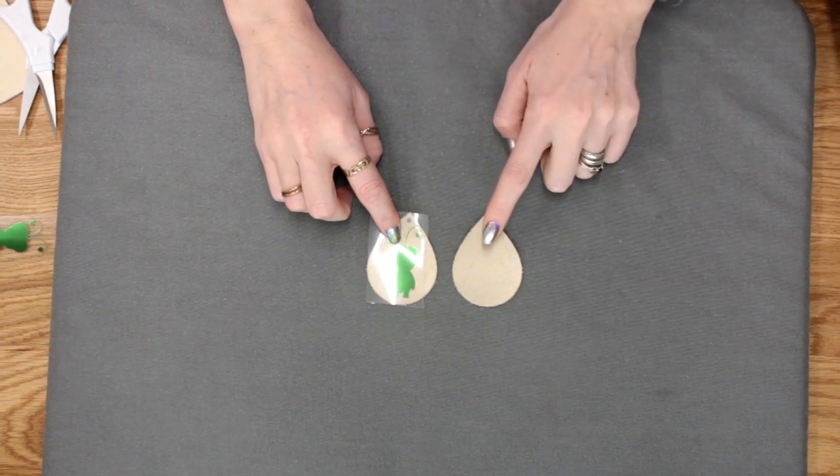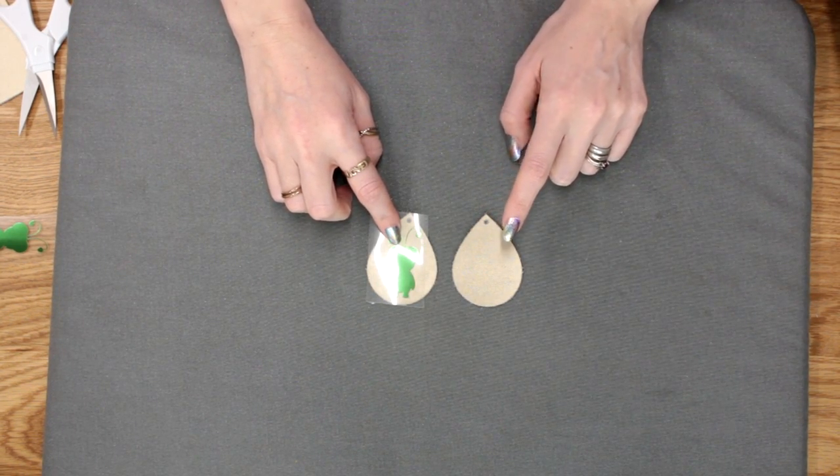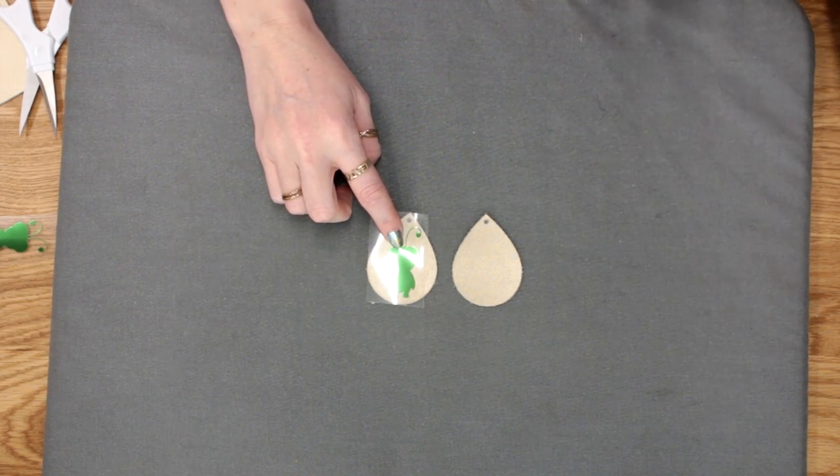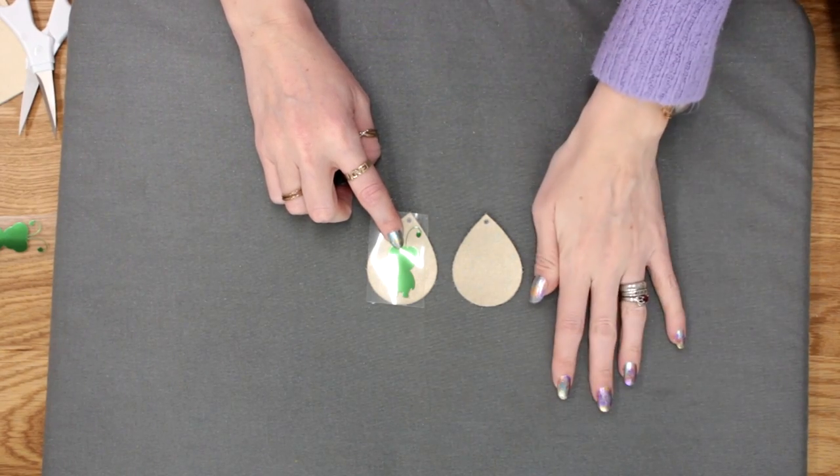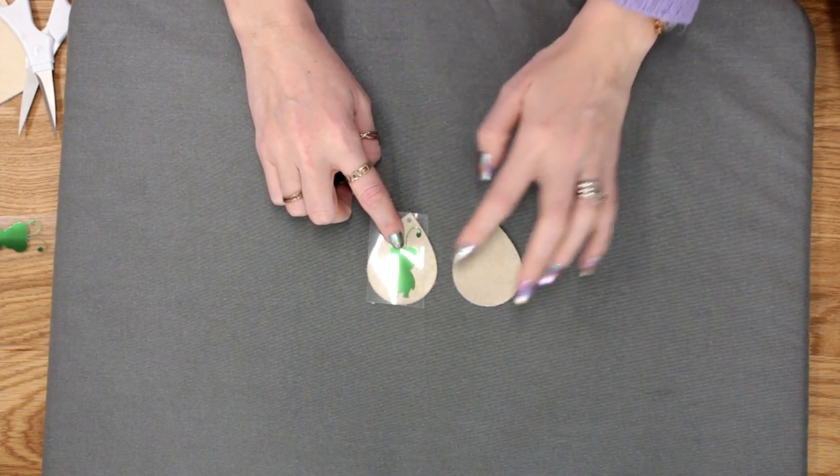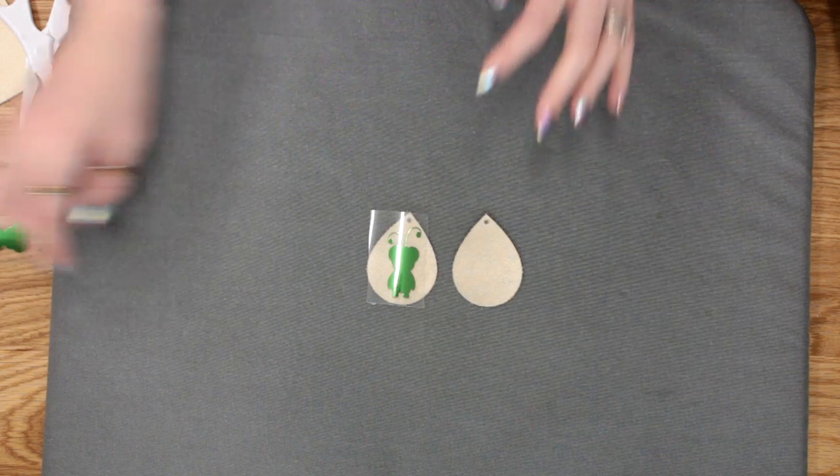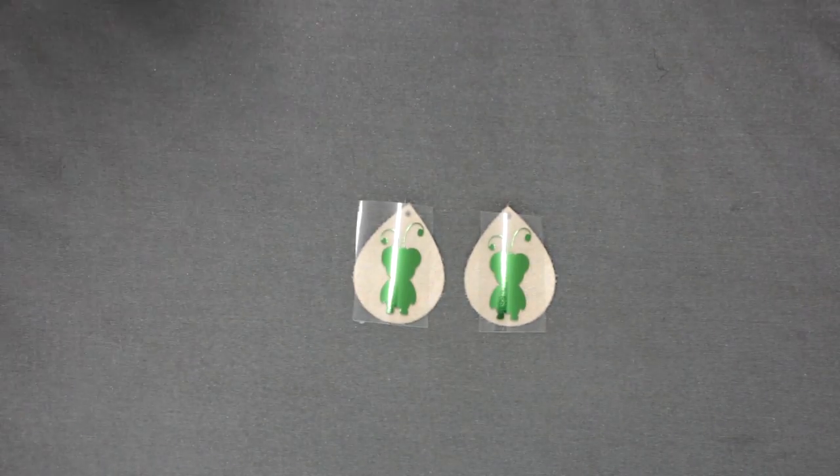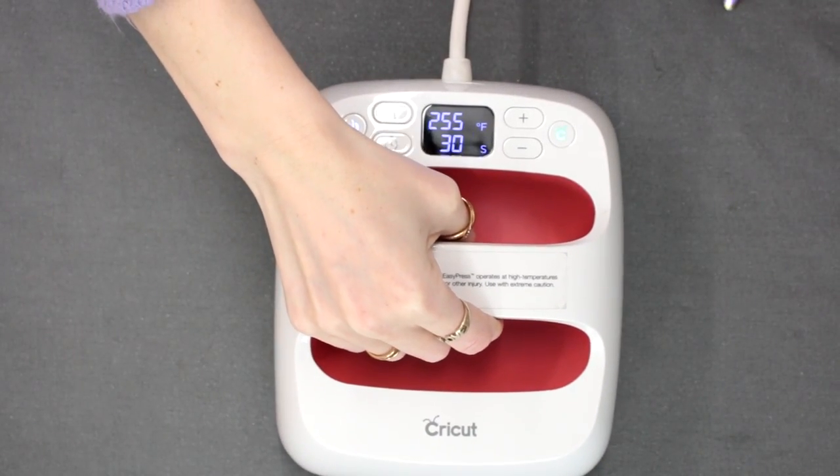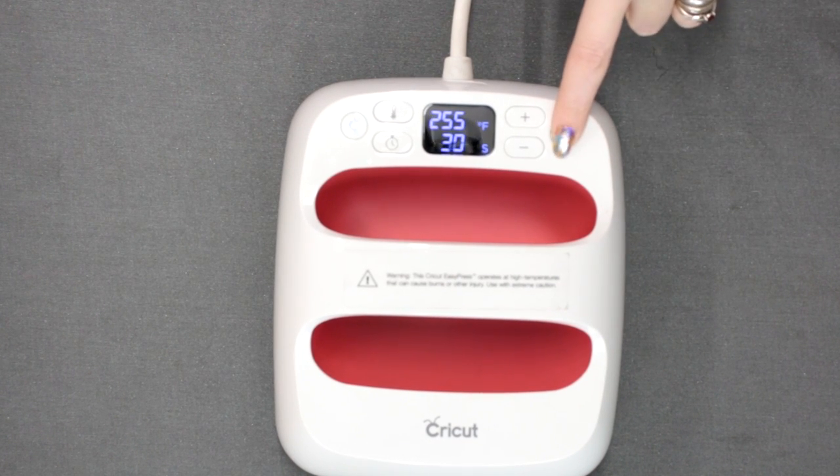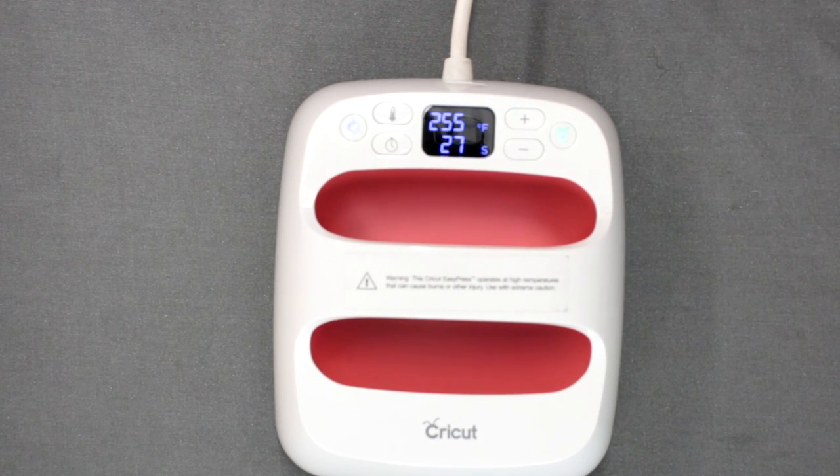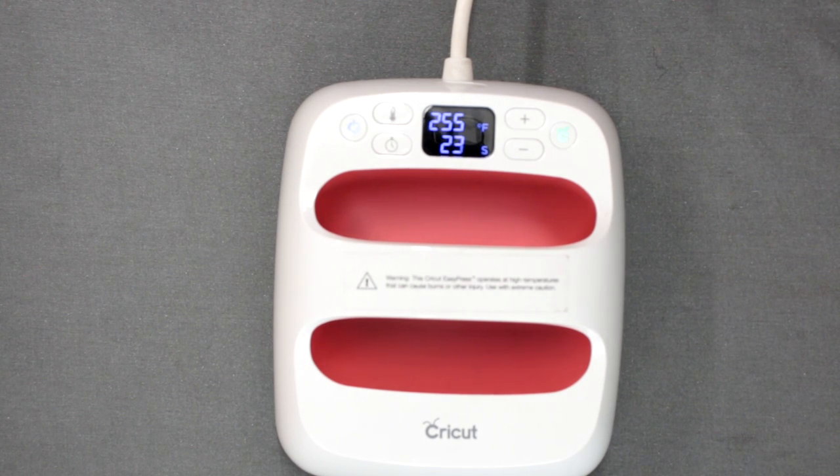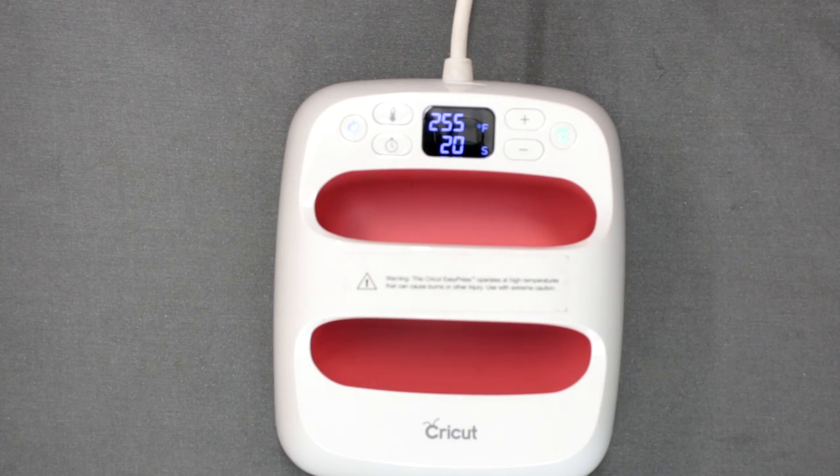Now, I am not going to preheat my leather today—I just don't feel it's necessary. However, as we know, with most times we use our EasyPress we want to preheat our mat and material. I am not going to do that today. I'm happy with the placement of those. I'm going to bring my EasyPress in and just let it do its thing. I'm not going to apply any pressure onto this with the foil iron-on onto the metallic leather—it just doesn't need it.